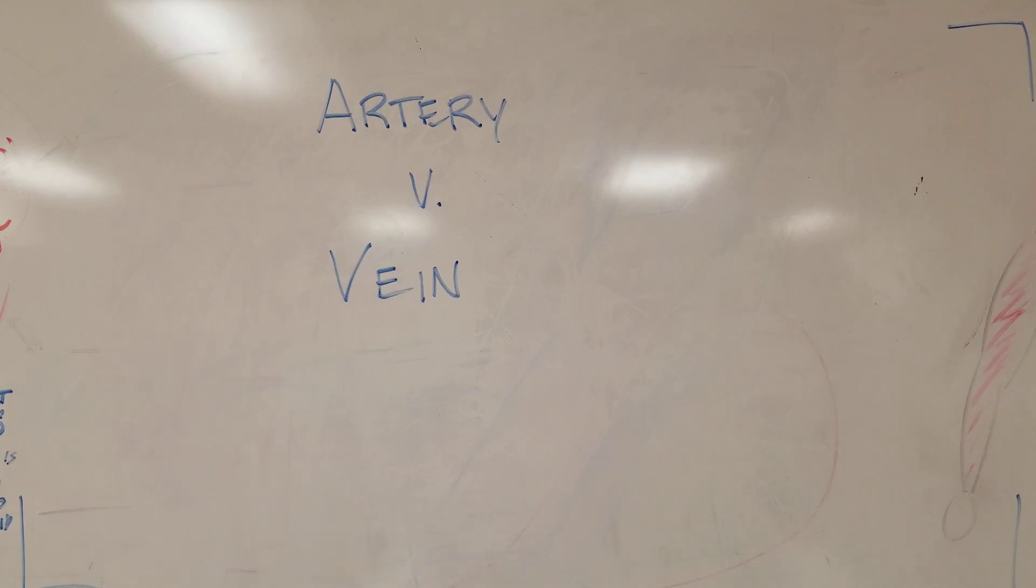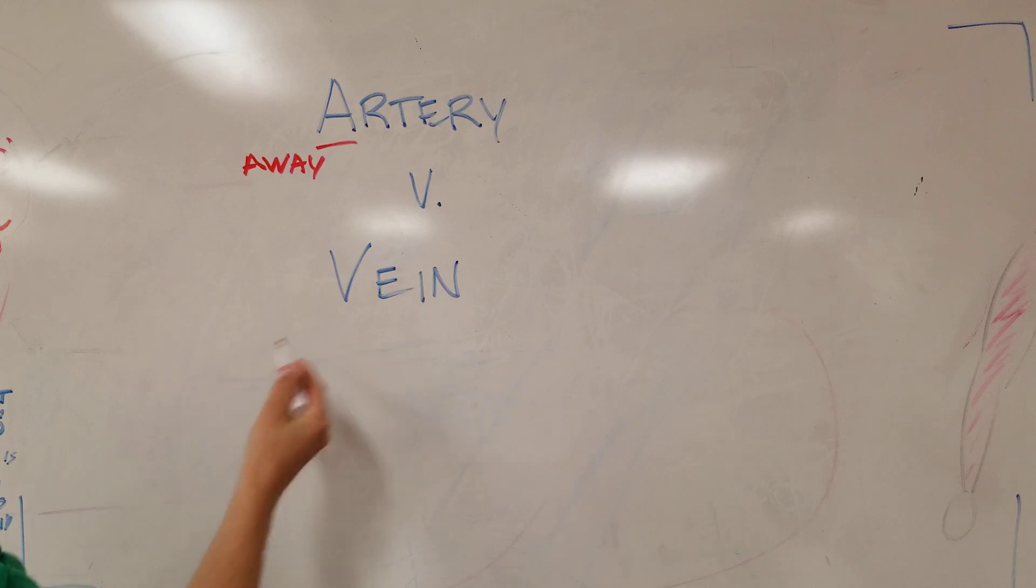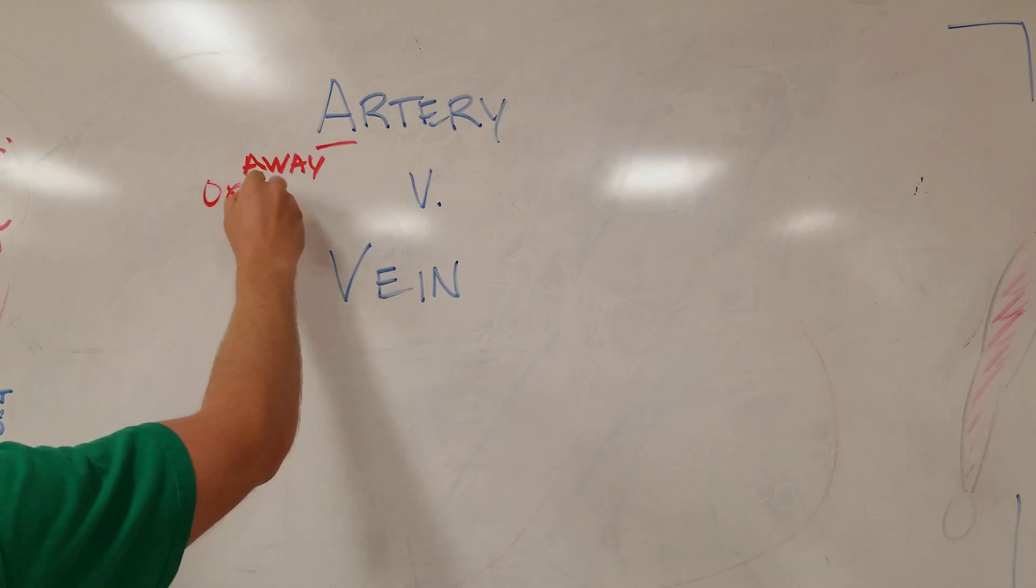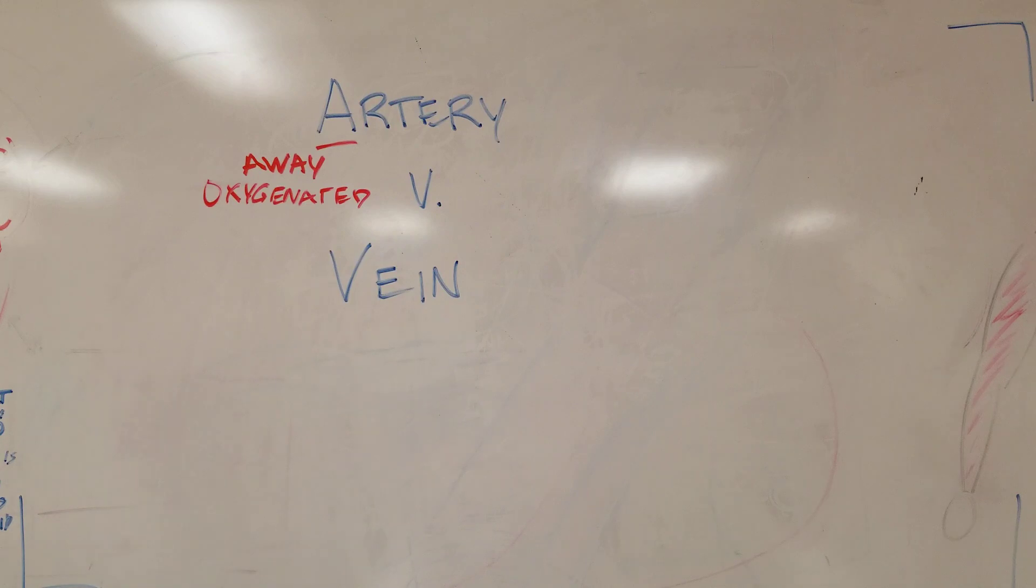So firstly, an artery classically moves away from the heart. Artery away, and a vein goes back to it. Unfortunately, it's not a good mnemonic there, but an artery goes away. It's classically oxygenated blood, or more oxygenated blood would be more accurate, with the exception of the pulmonary artery, which doesn't go away from the heart but goes to the lungs to pick up oxygen.